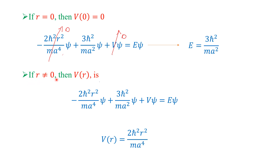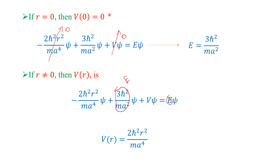When r is not equal to 0, we use the full expression. Since E = 3h-cross²/(ma²), the constant energy terms cancel, and solving for V(r): V(r) = 2h-cross²r²/(ma⁴). This is the potential for Part 2. We have seen the energy eigenvalue as well as the potential for this problem. Thank you very much for watching and supporting me.